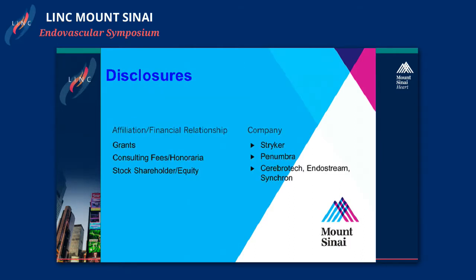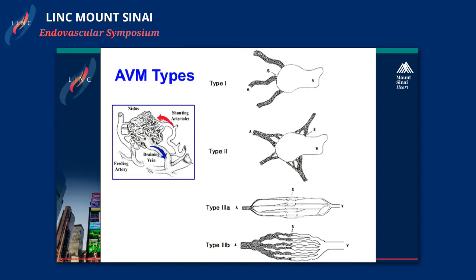These are disclosures. AVMs, as we all know, are abnormal connections between arteries and veins, typically with an intervening nidus or collection of abnormal vessels, with feeding arteries and draining veins.